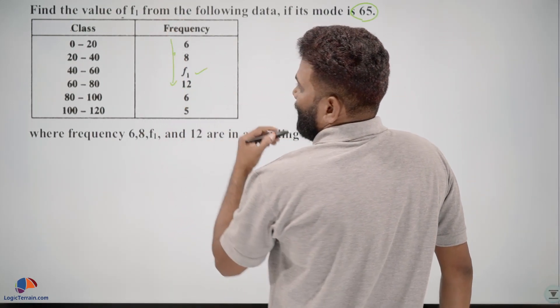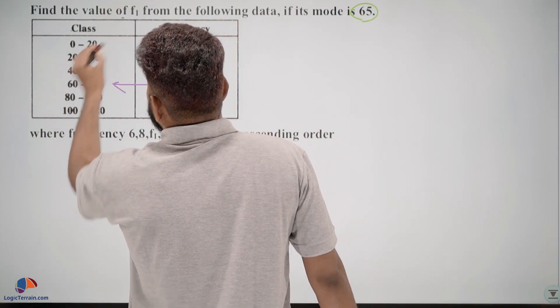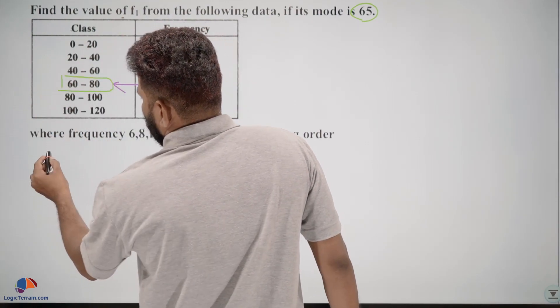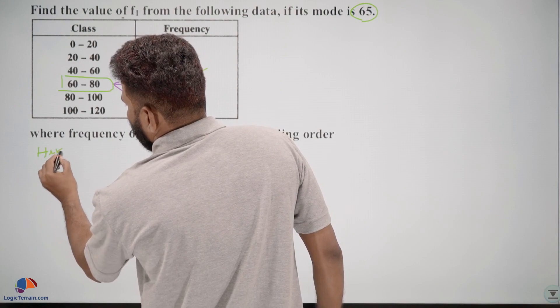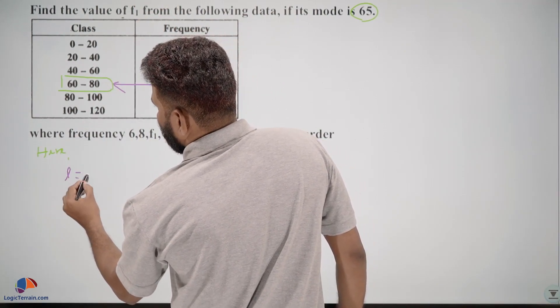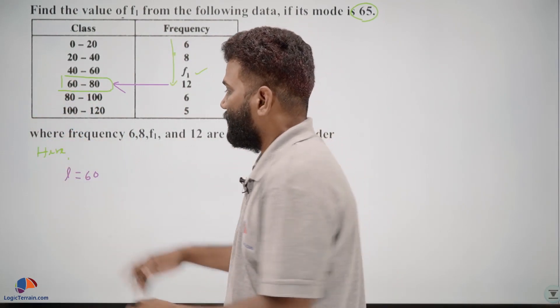So 12 is maximum frequency, then the corresponding class will be the modal class. Here l is equal to 60, which means the lower boundary of the modal class is 60.